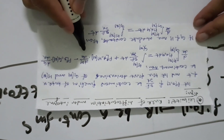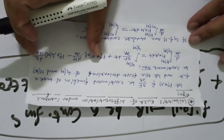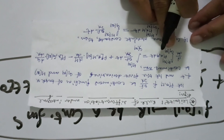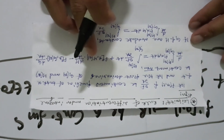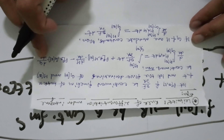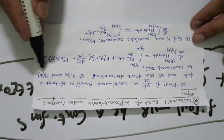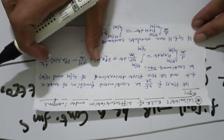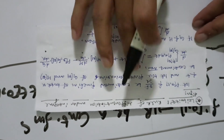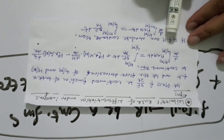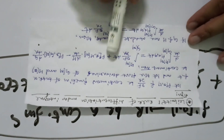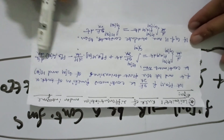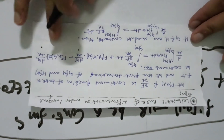If G and H are constants, then dG/dx = 0 and dH/dx = 0, so those two boundary terms drop out. Only the integral of the partial derivative remains. We are going to apply this Leibniz rule result to our given condition.